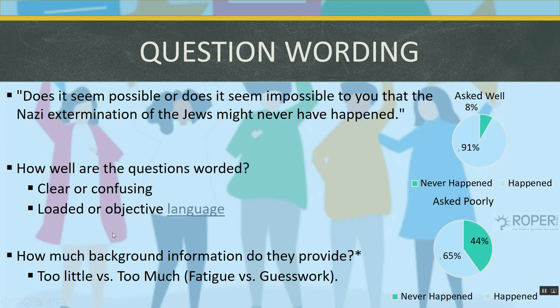The poll was re-administered with various other wordings, and when the question was clarified, it turned out only about 8% of Americans harbored doubts about whether the Holocaust happened. The original question contained a double negative — 'impossible' and 'never' conflict with one another, flipping the meaning of yes or no answers. So 44% of Americans are not Holocaust deniers — it was a confusing, poorly worded question that failed to elicit responses accurately reflecting the actual thoughts and attitudes of respondents.